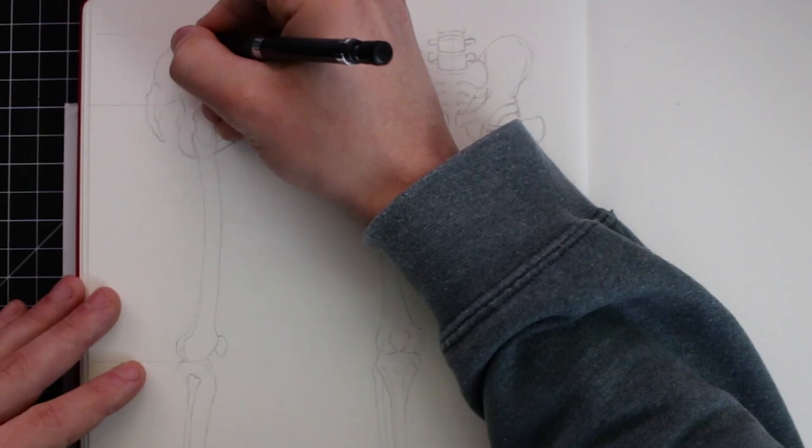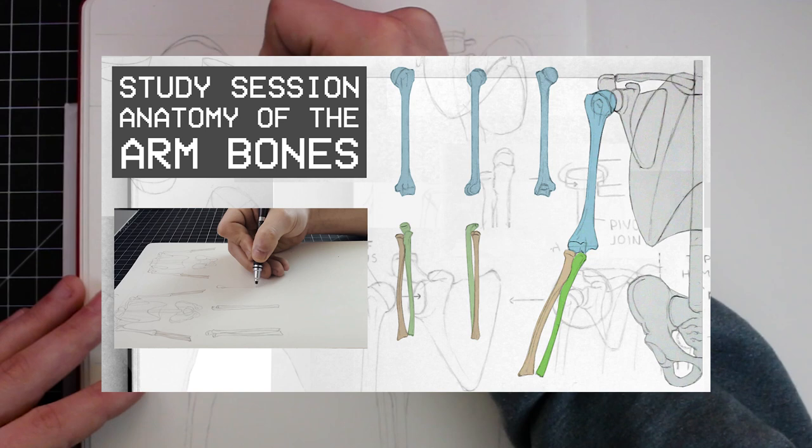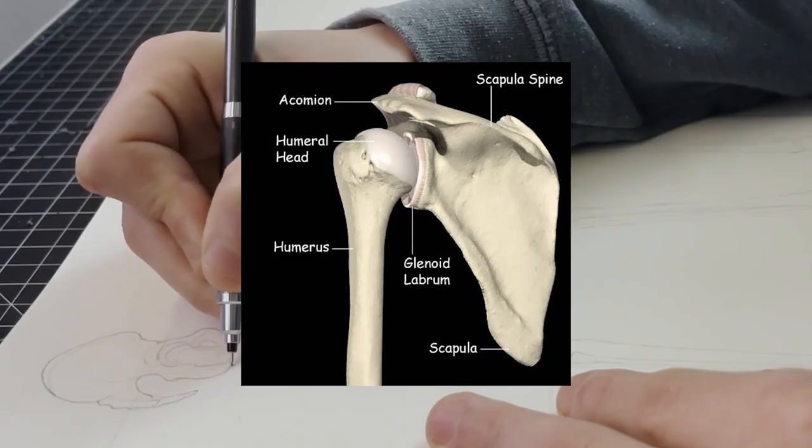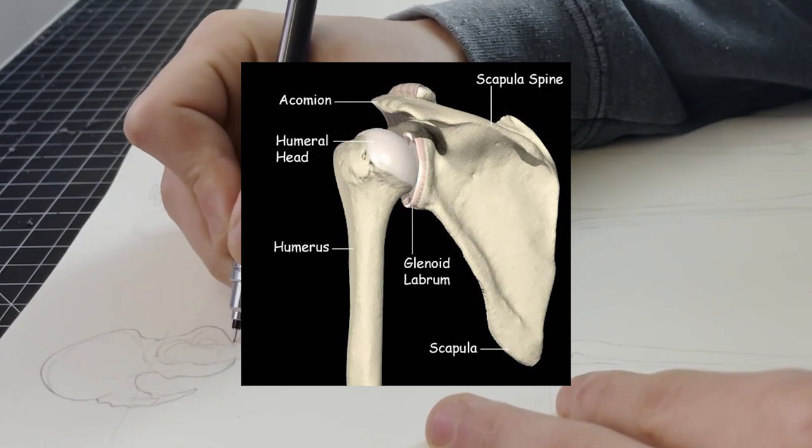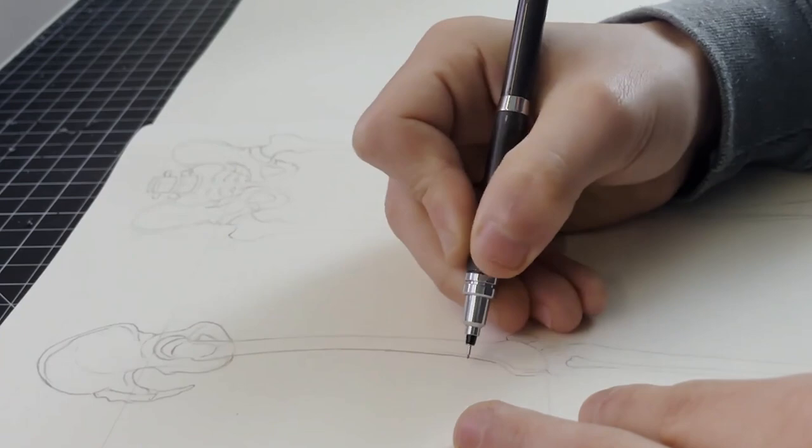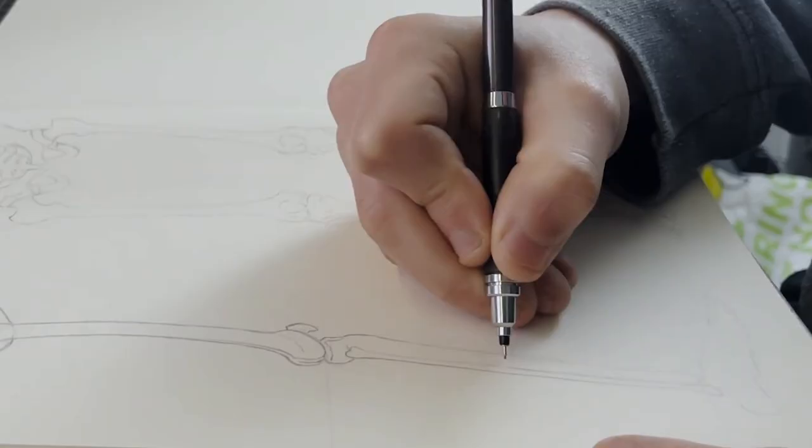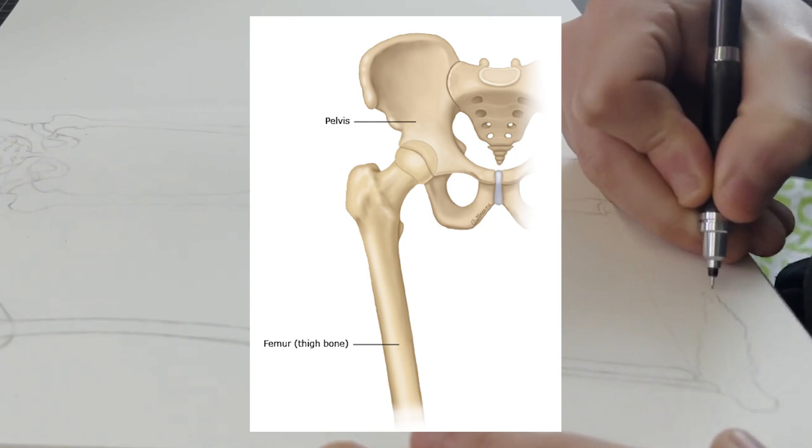Now one thing that you might have noticed already is how similar the structure of the leg is in comparison to the arms, and we've already covered the arms which will help us understand the legs. For example, a humerus of the arm connects to the scapula which allows the arms to move around freely separated from the rib cage. And so in a similar fashion the legs also move around, and so they need to be safely connected to the body as well, and this is where the pelvis comes into play.